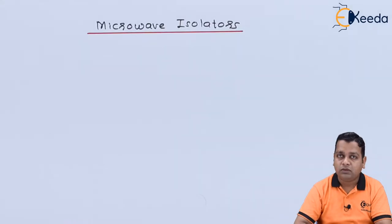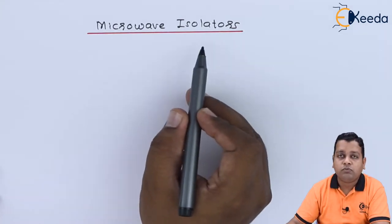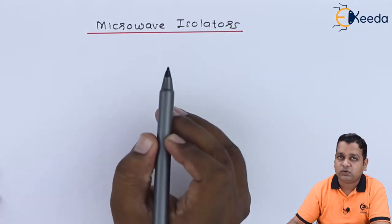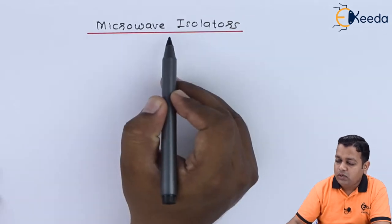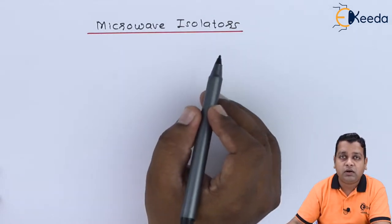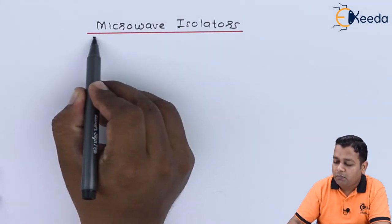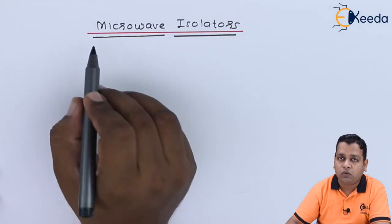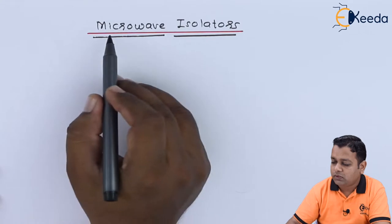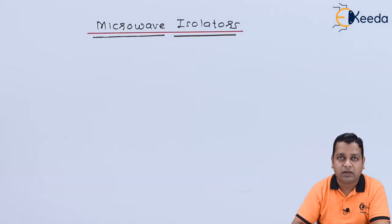We start with our topic, titled Microwave Isolators. From the name of the topic you can guess what the operation of this device is intended to be — the isolator isolates. What is isolated? The microwave signal can be isolated for one direction by the use of this microwave isolator passive component. To understand the same, let us take the help of one schematic diagram.